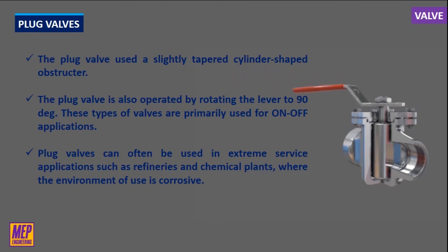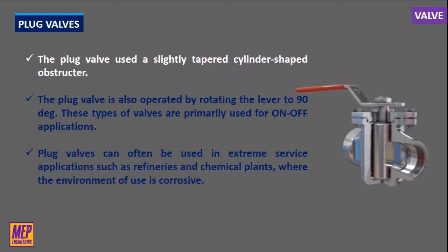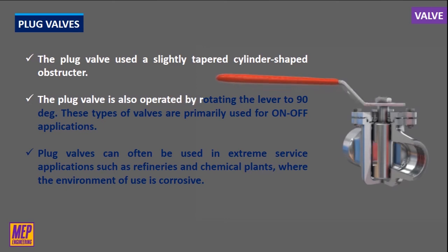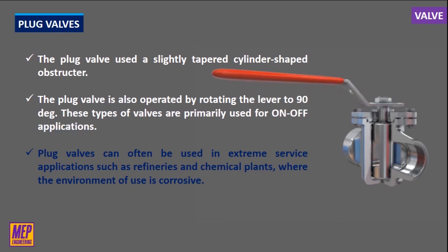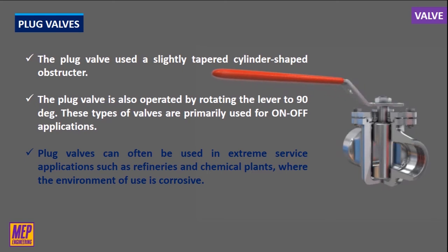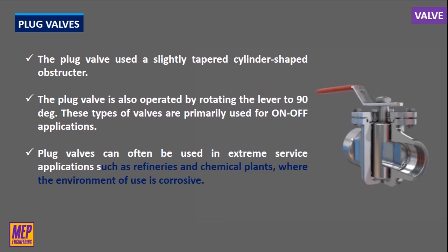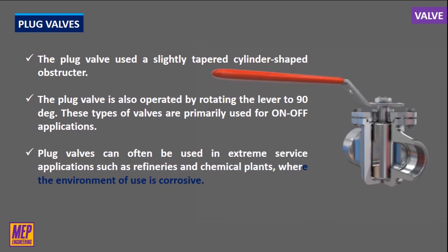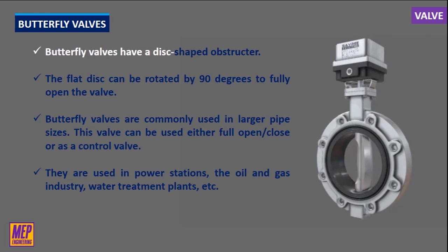The torque required to operate a ball valve is negligible. Plug valves have almost the same construction as ball valves, except for the shape of the obstructor — the plug valve uses a slightly tapered cylinder-shaped obstructor. The plug valve is also operated by rotating the lever 90 degrees. These types of valves are primarily used for on-off applications. Plug valves have an advantage over ball valves in that they contain no voids or cavities in which media can get trapped. They can be adjusted to fix leaks that develop over time and can be used in extreme service applications such as refineries and chemical plants where the environment is corrosive.